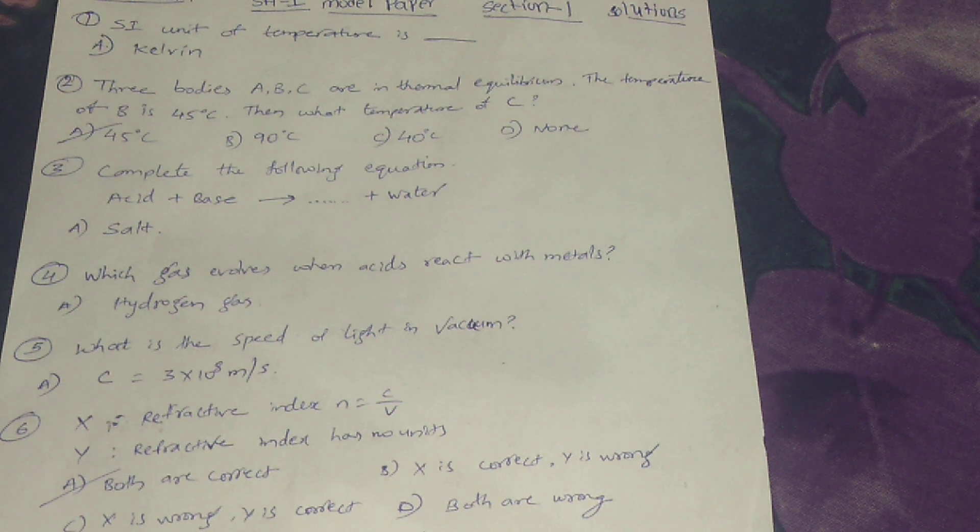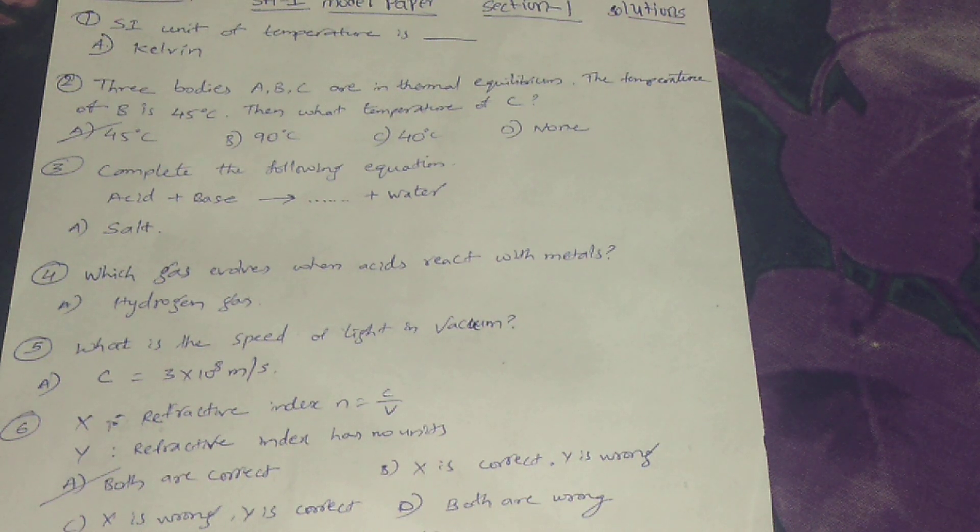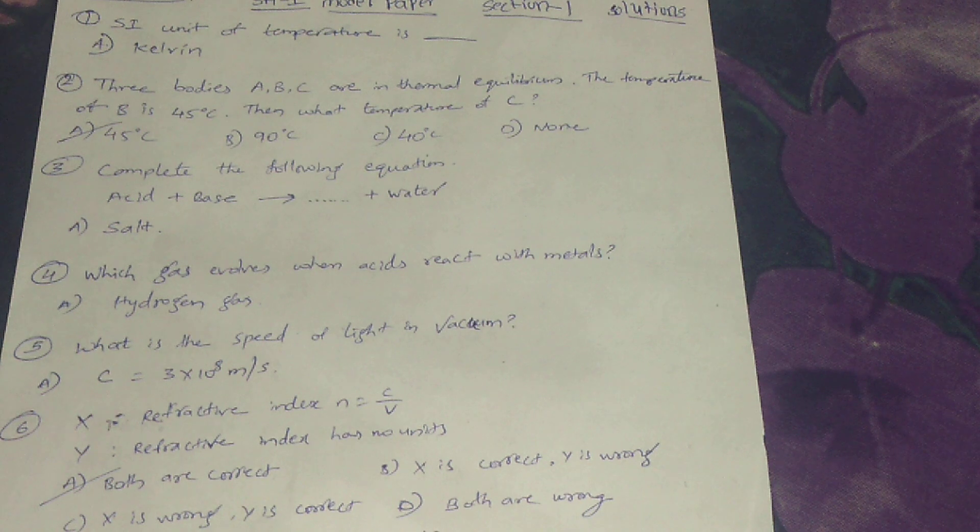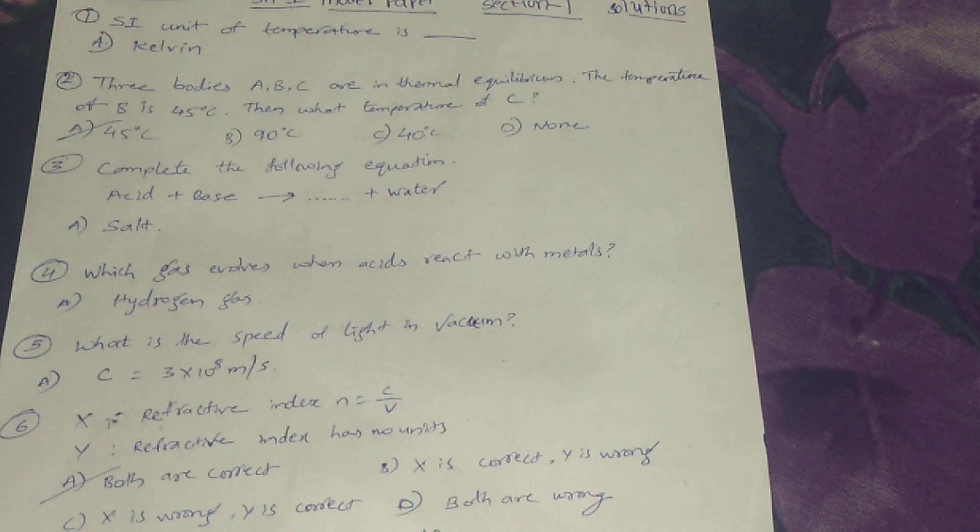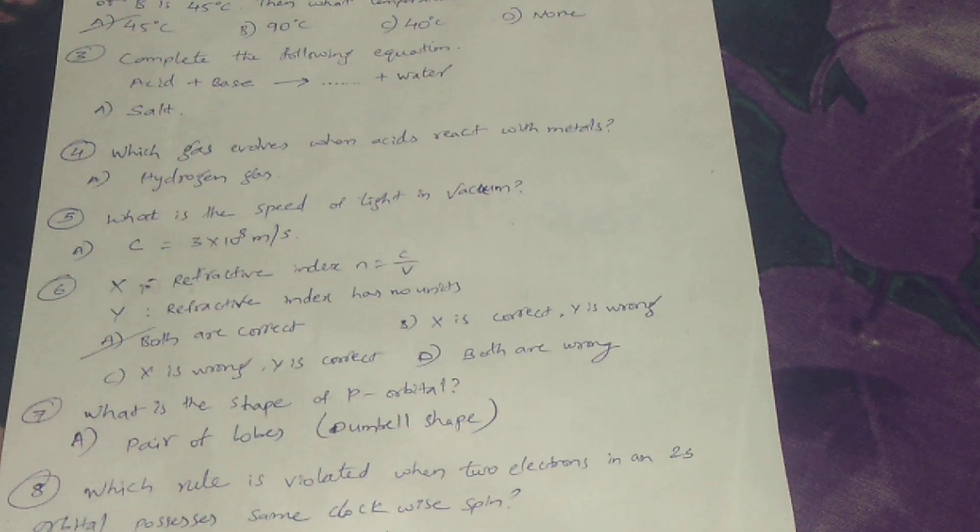Sixth one: X, refractive index N equals C by V. Y, refractive index has no units. Answer is both are correct.